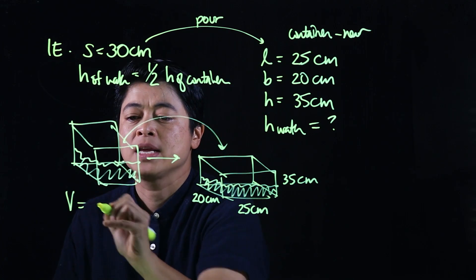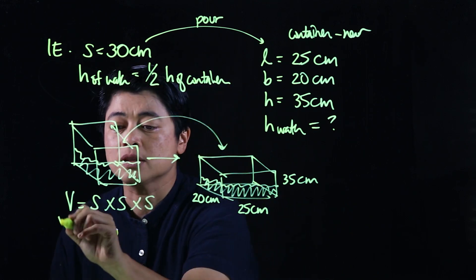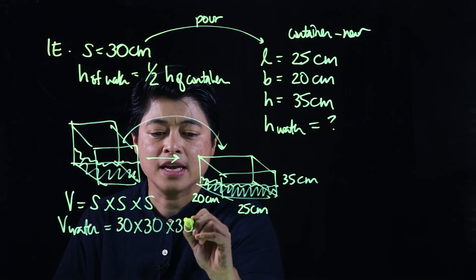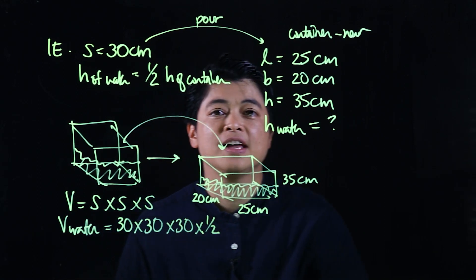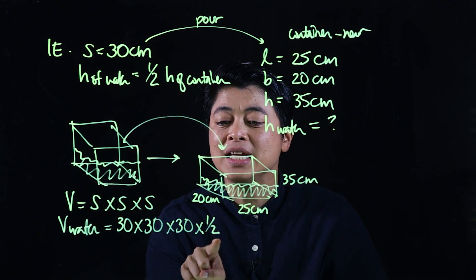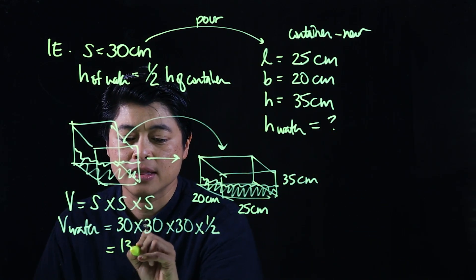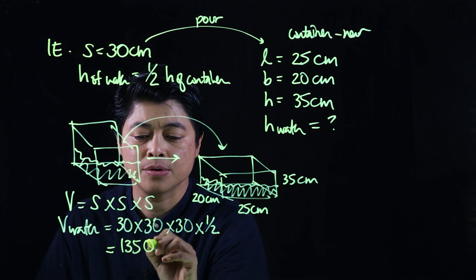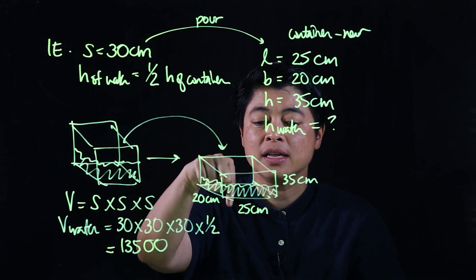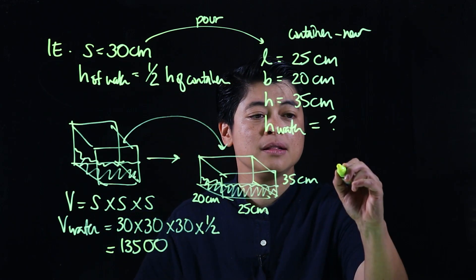The volume of water in the cubical container is 30 by 30 by 30 multiplied by one-half, since we're only taking half the height. Multiplying all of those together gives 13,500 centimeters cubed. That is the volume of water to be poured into the rectangular tank.